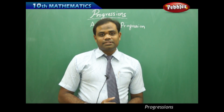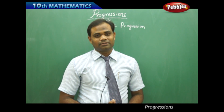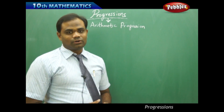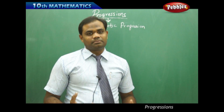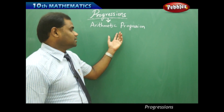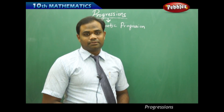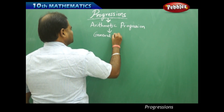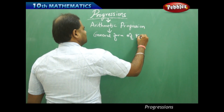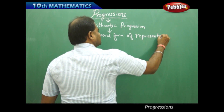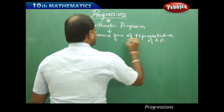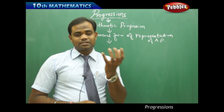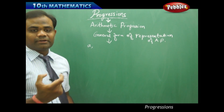Now let's see the general form of representing the arithmetic progression. Now that we have defined what kind of pattern makes an arithmetic progression, next comes the concept of how we can solve many problems involving arithmetic progression. We start with the general form of representing an arithmetic progression.